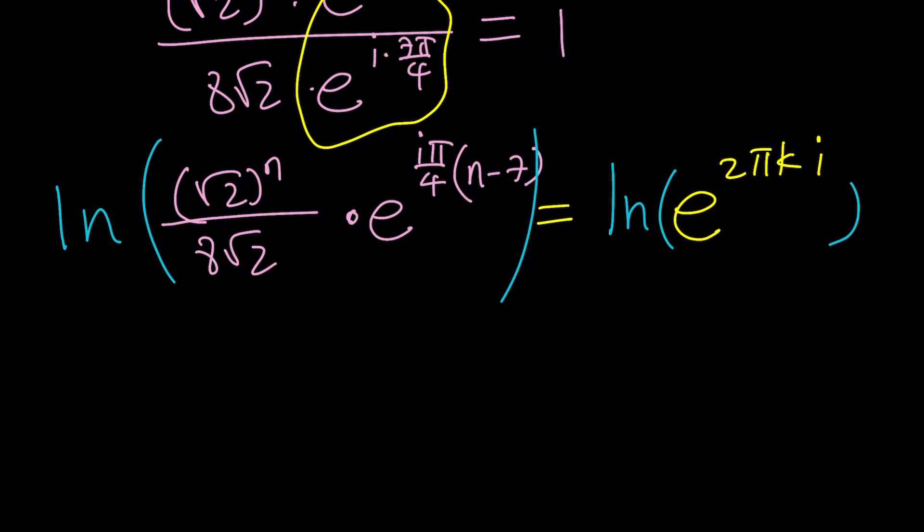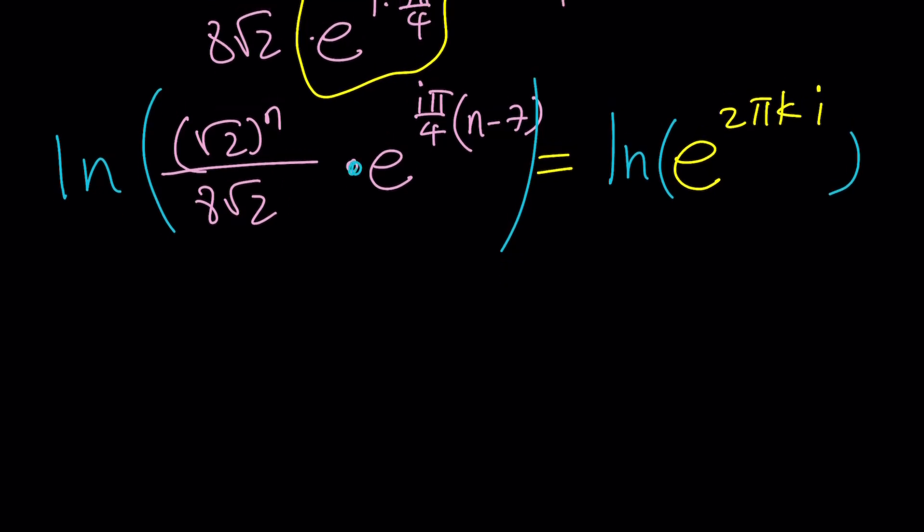But this is a product, so I can kind of write it as ln something plus something else. But this is a quotient, so I can kind of write it like this. Let me go ahead and do this in two steps so it's not too confusing.